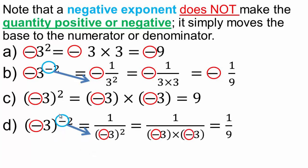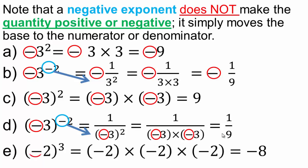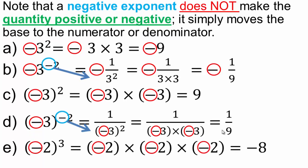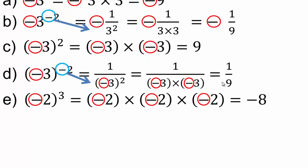This negative 2 exponent made the whole base go to the denominator and made a positive exponent, and then you know how to evaluate it. Negative 3 times negative 3 is going to give you 9. Now, negative 2 multiplied by itself gives you 4, and negative 2 times 4 is negative 8.